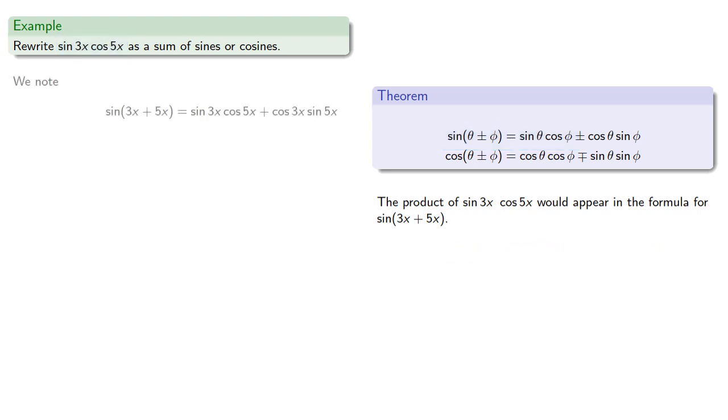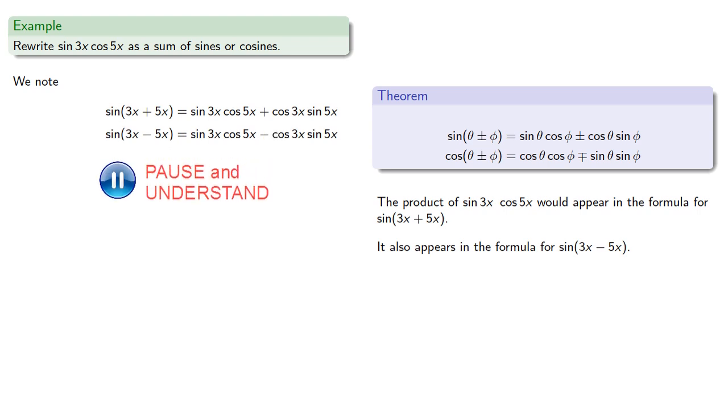Let's write that down. This product would also appear in the formula for sin(3x - 5x). So we'll write that down as well. And we note that if we add them, we can eliminate the term we don't want, cos 3x sin 5x. So we'll add them.